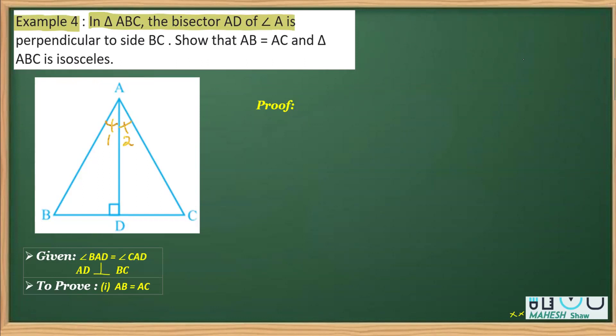And then it also says that this AD is perpendicular to BC. That means we have these two angles as 90 degrees each.